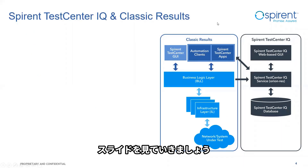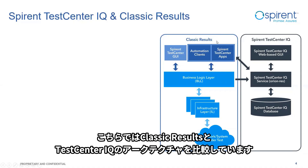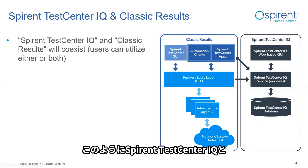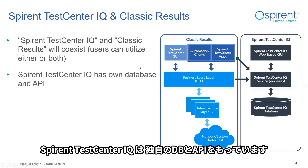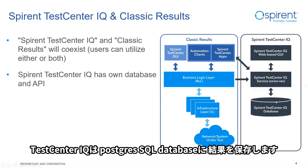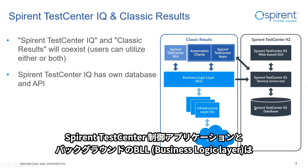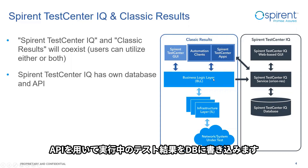This slide illustrates a side-by-side comparison of classic results architecture and the additions made for Spirent Test Center IQ. Currently, Spirent Test Center IQ and classic results do coexist side by side. Spirent Test Center IQ, though, has its own database and API. With Test Center IQ, a PostgreSQL database is installed for storing results. Spirent Test Center applications and the BLL layer of STC write results using the Test Center results API to the Test Center database.